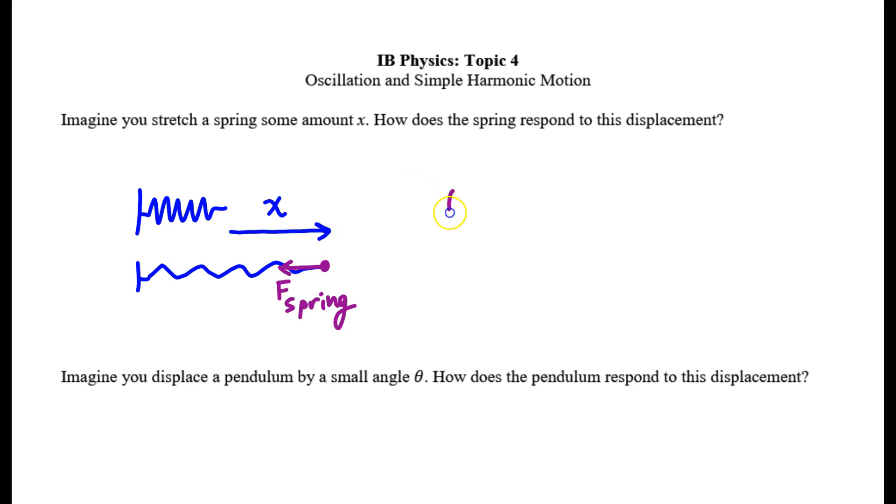So that restoring force, we know, is equal to negative the spring constant times the displacement. Here, this is the spring constant k, which is really just the stiffness of the spring, and it is measured in newtons per meter.